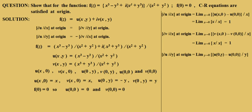∂u/∂y at origin is given by the limit as y→0 of [u(0,y) − u(0,0)] / y. The value of u(0,y) = −y. So this limit equals the limit as y→0 of −y/y, which equals −1.